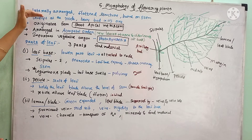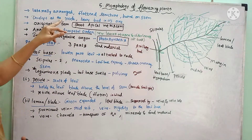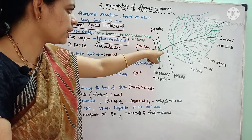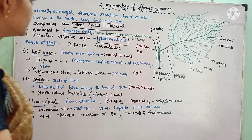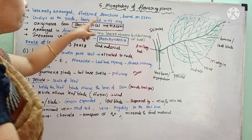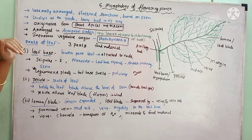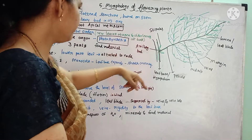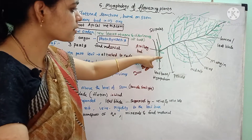To summarize: leaves are laterally arranged, mostly flattened structures born on the stem at the node region. An axillary bud is present in the axil region. They originate from the shoot apical meristem and are arranged in acropetal order. The leaf is the most important vegetative organ for photosynthesis. The three parts of the leaf are leaf base, petiole, and lamina. The leaf base is the lowermost part attached to the stem at the node, and two green leaf-like structures called stipules are present there.